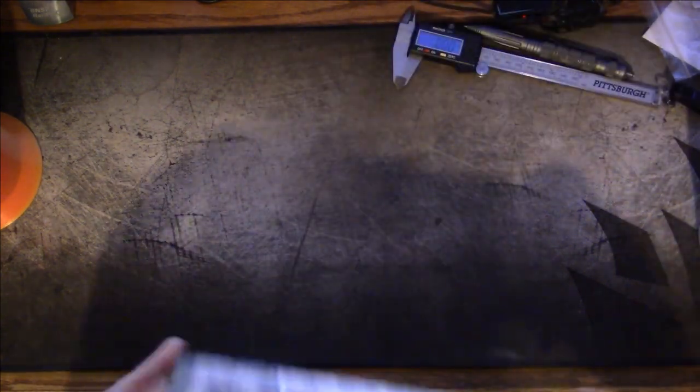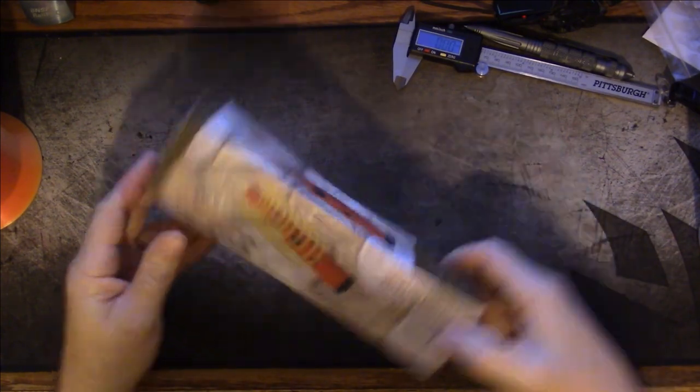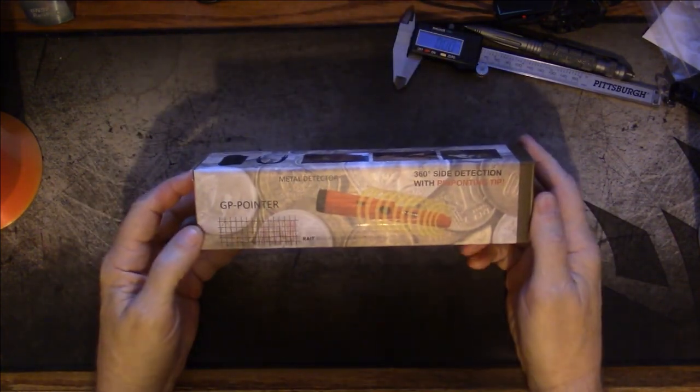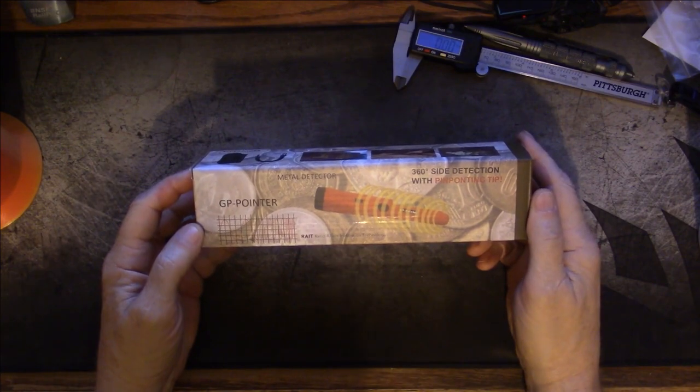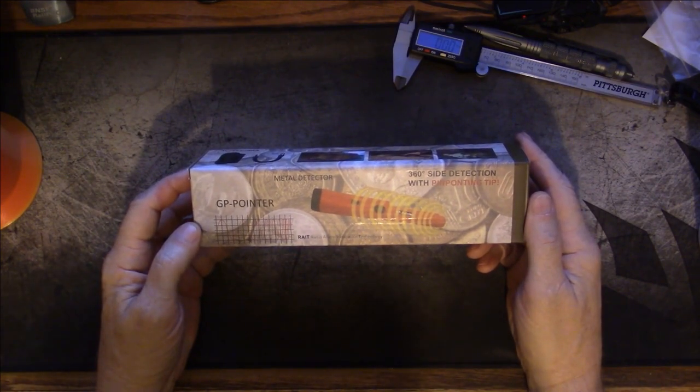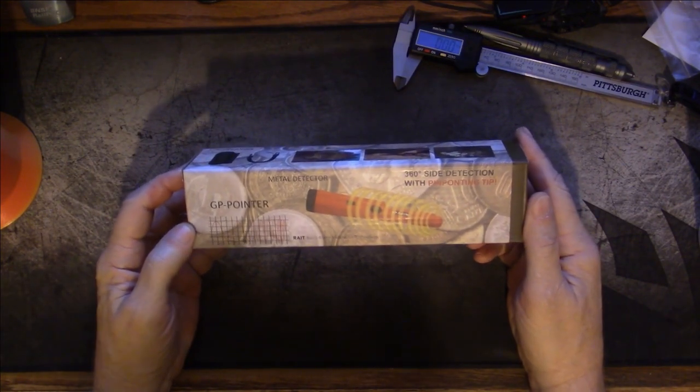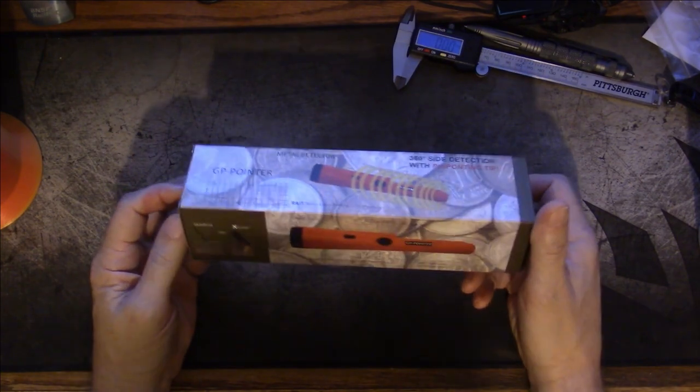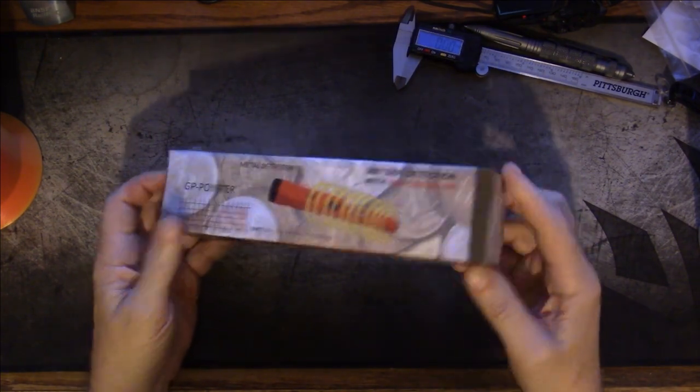Let me get this stuff out of the way. So here it is, this is what arrived. This is the GP Pointer metal detector, 360-degree side detection with pinpointing tip. Cost $25, and shockingly enough it gets really good reviews.